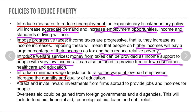Increasing the quantity and quality of education: if there is better quality and quantity of education, people will be more skilled and have more experience, which will increase the probability of them getting a better job. That will help them earn a good income and live with good living standards, which will reduce poverty.